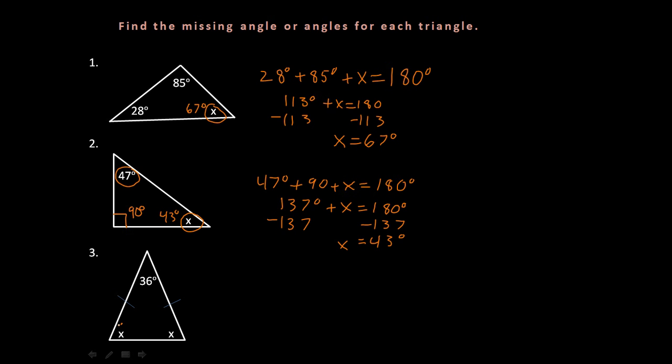Now this one's kind of tricky because it has two X's. But it's also giving us some information about this triangle. You can see these little marks right here. What that means is that this is an isosceles triangle, and so these X's are actually both the same. So this problem is solvable. All you have to do is do 36 degrees plus X plus X equals 180. So if we're going to look at this problem, we know that in algebra we need to combine our like terms. So we get 36 degrees plus 2X equals 180 degrees.